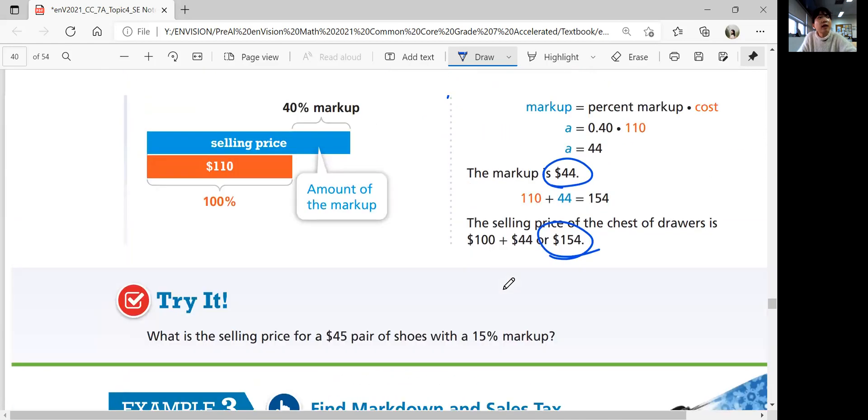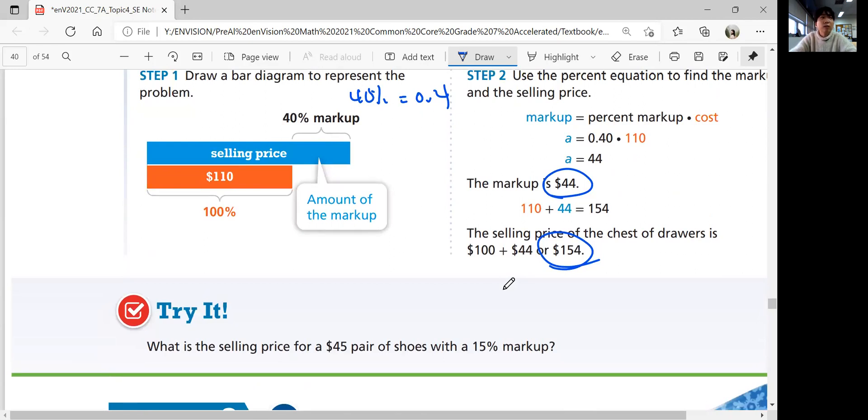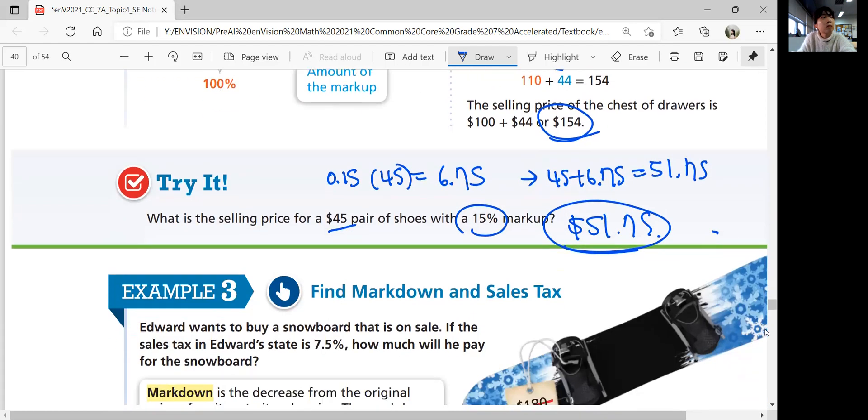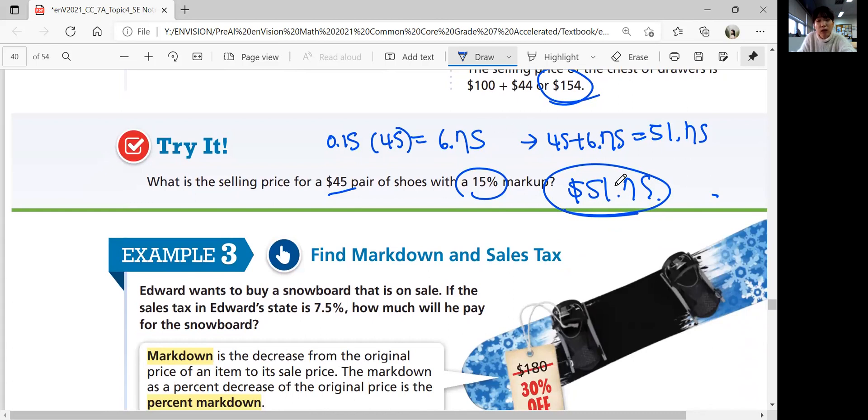Let's do a try. What's the selling price for $45 pair of shoes with a 15% markup? That's the original price. 15% is going to be the markup price. First, figure out 15% of 45 by multiplying 0.15 times 45. Then you add it to the original price, which is $45. That's going to be $51.75. That's the selling price. Markup price is $6.75, selling price is $51.75.